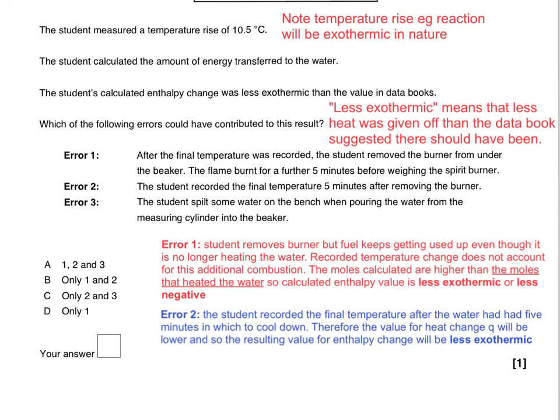In the second error, the student recorded the final temperature after the water had five minutes in which to cool down. Therefore the heat change Q in Q = mcΔT will be lower because ΔT will be much less, and so the resulting value for the enthalpy change will again be less exothermic.